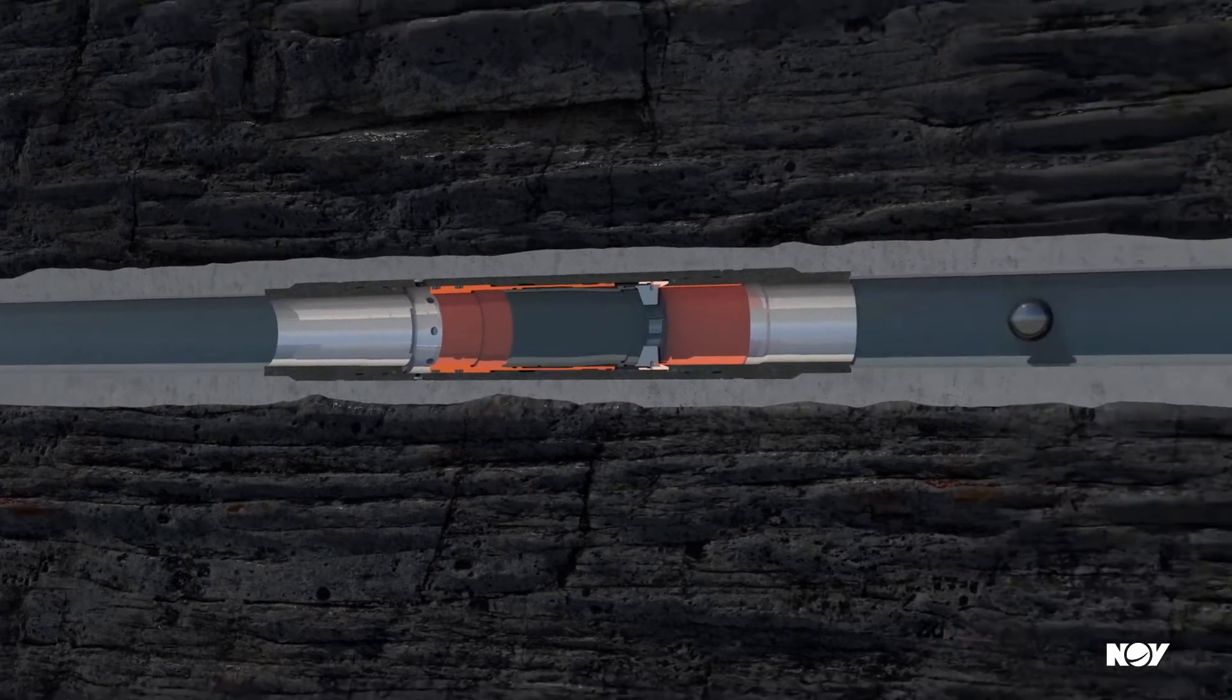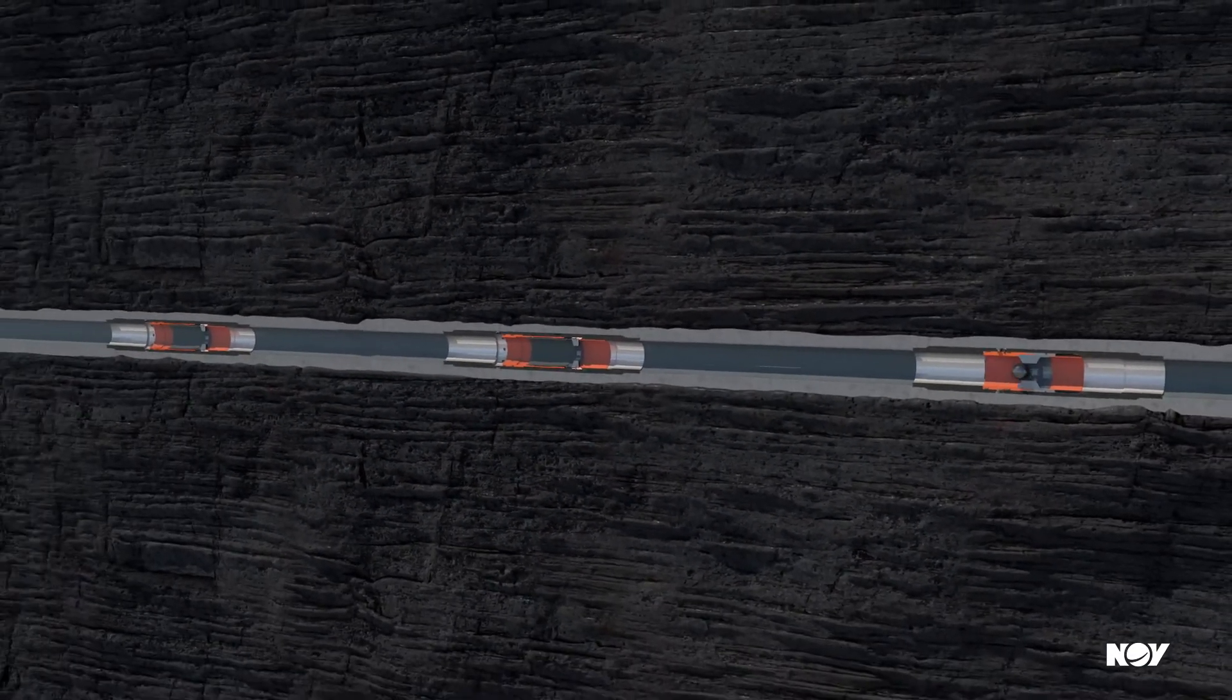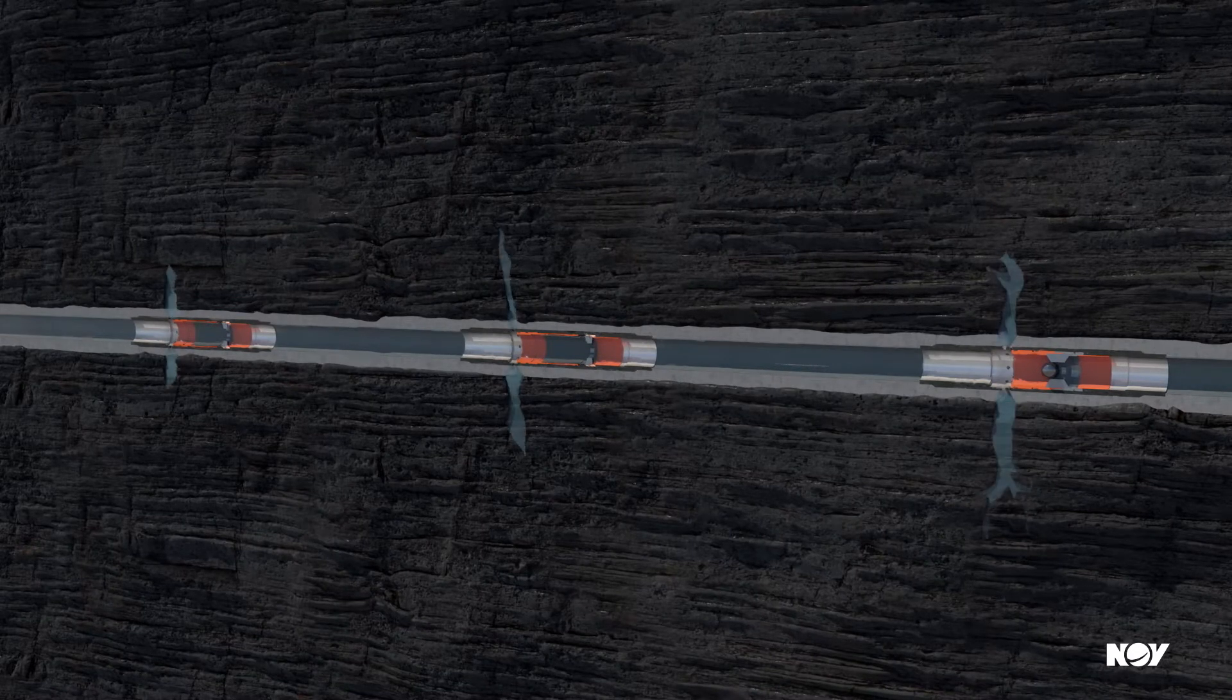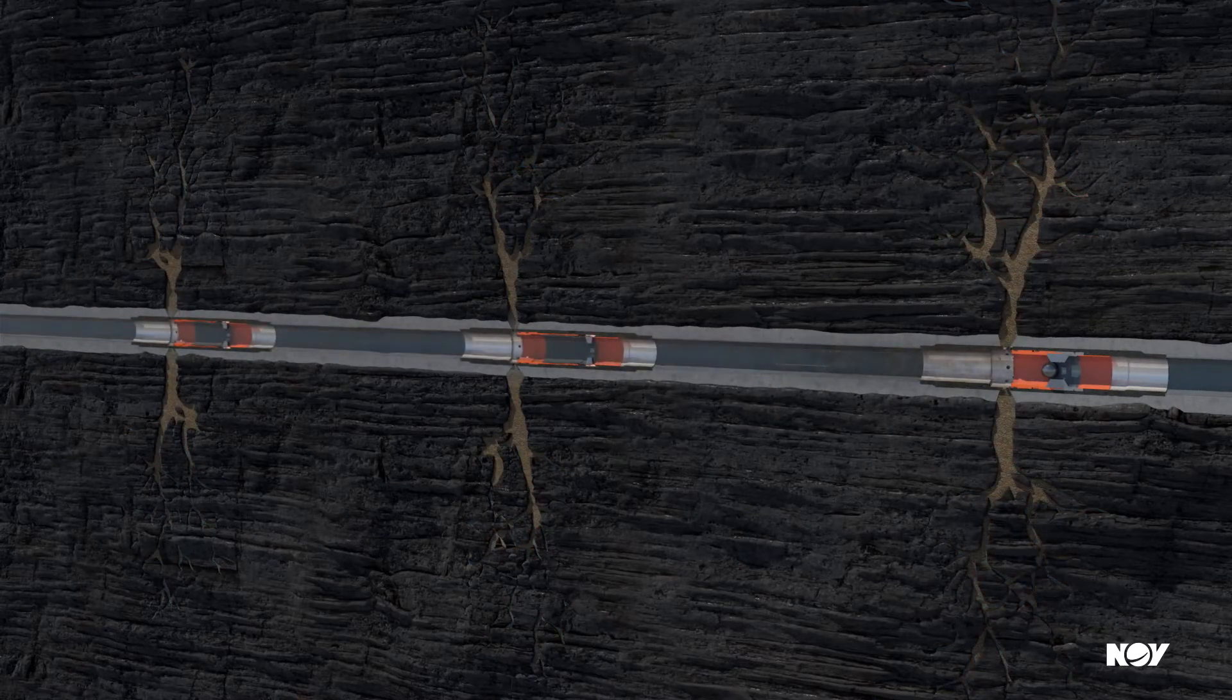When the ball reaches the seat corresponding to its size, it opens each sleeve until it reaches the last in the stage and is stopped. This isolates the previous stages and allows for an increase in pressure, which breaks the cement and fractures the formation.